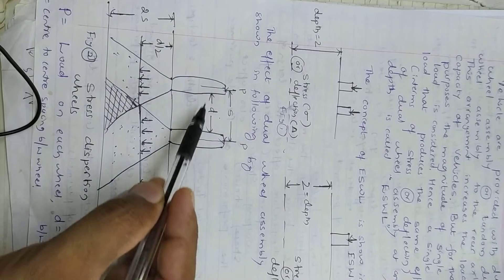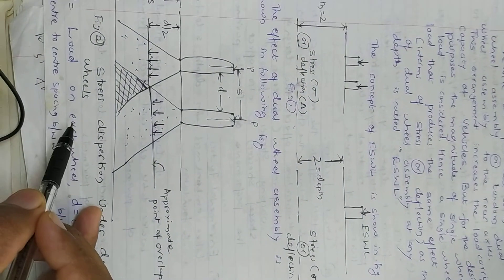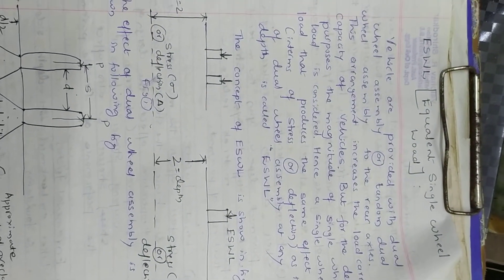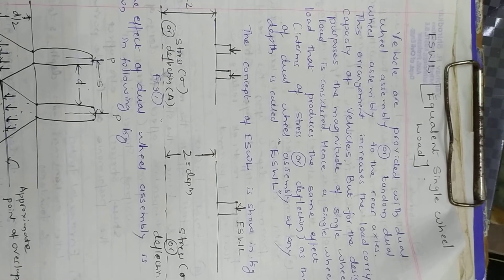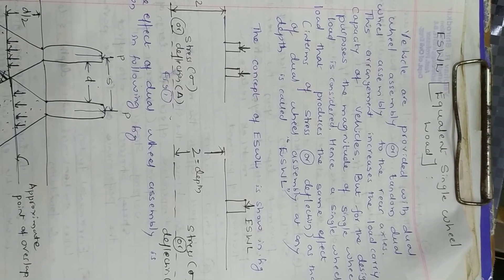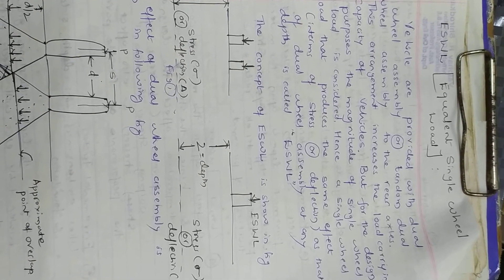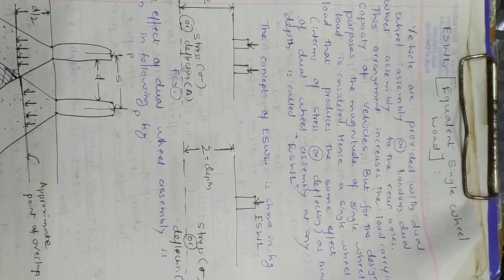Vehicles are provided with dual wheel assembly or tandem dual wheel assembly at the rear axle. This arrangement increases the load-carrying capacity of vehicles. But for design purposes, the magnitude of a single wheel load is considered. Hence, a single wheel load that produces the same effects...